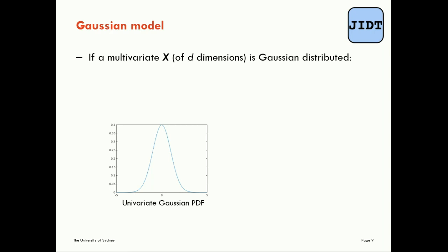For a multivariate X of d dimensions we're going to generalize that to a multivariate Gaussian distribution. We can look at that for example by looking at samples drawn from a two-dimensional Gaussian distribution where the variables have a covariance of 0.5.